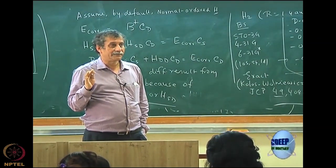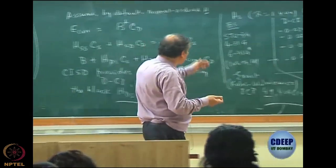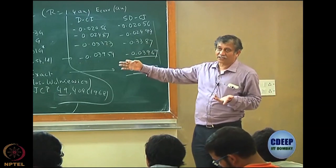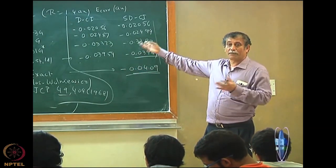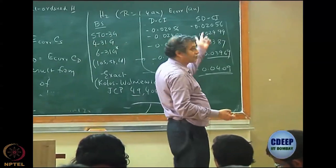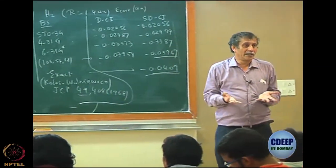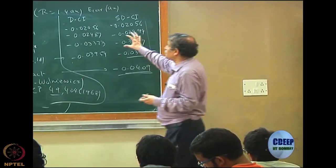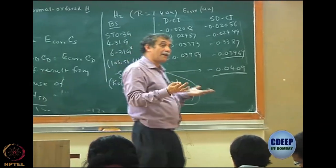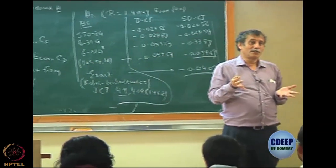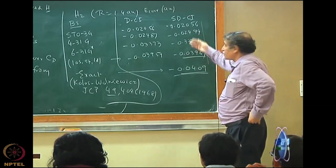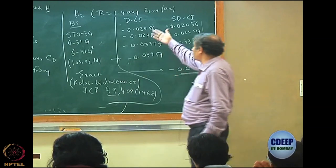As the basis set increases, the contribution of singles to the correlation energy actually increases. The Hartree-Fock energy also changes between bases, so the total energy change will be even more than just the correlation energy change. Here we are discussing only the correlation energy — for each entry, the Hartree-Fock in that basis is subtracted, and that subtracted number differs from basis to basis.